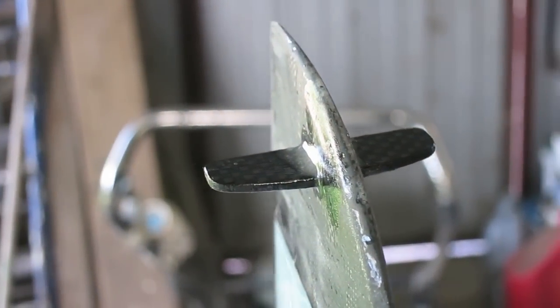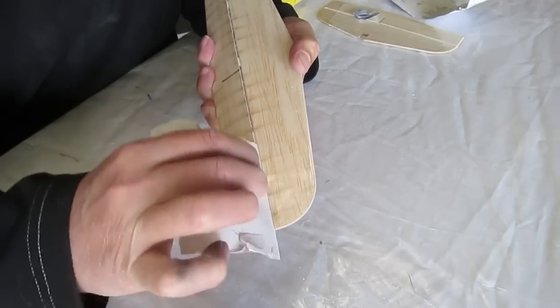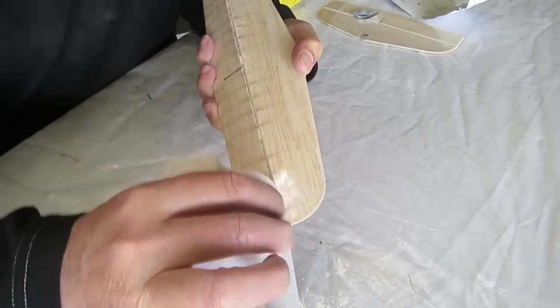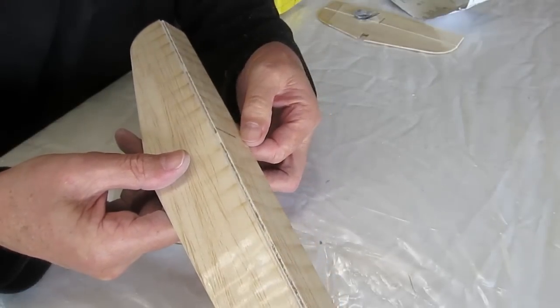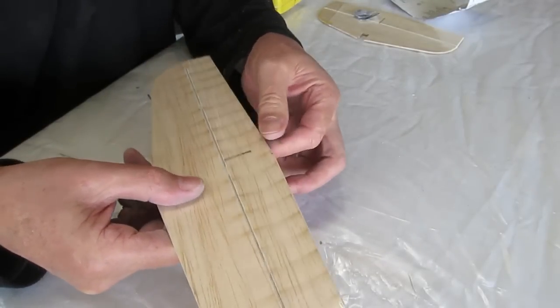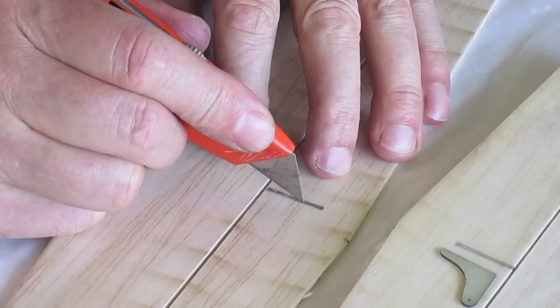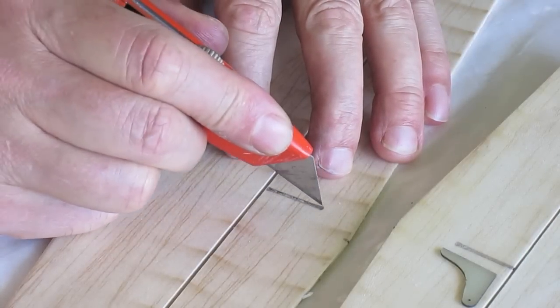Now I'm freeing up the elevator hinge and gluing in the control horn.